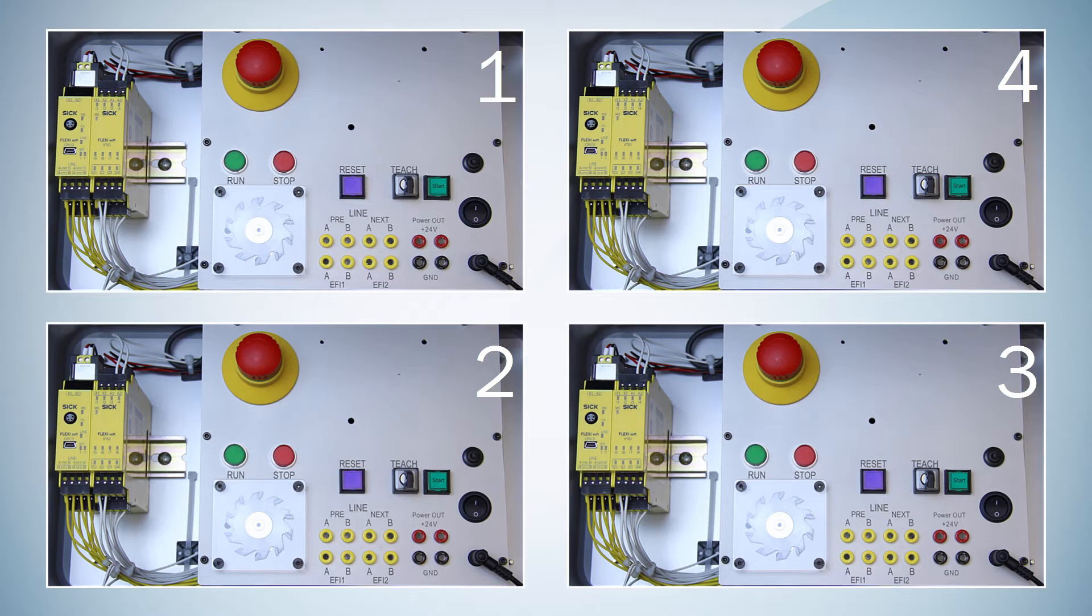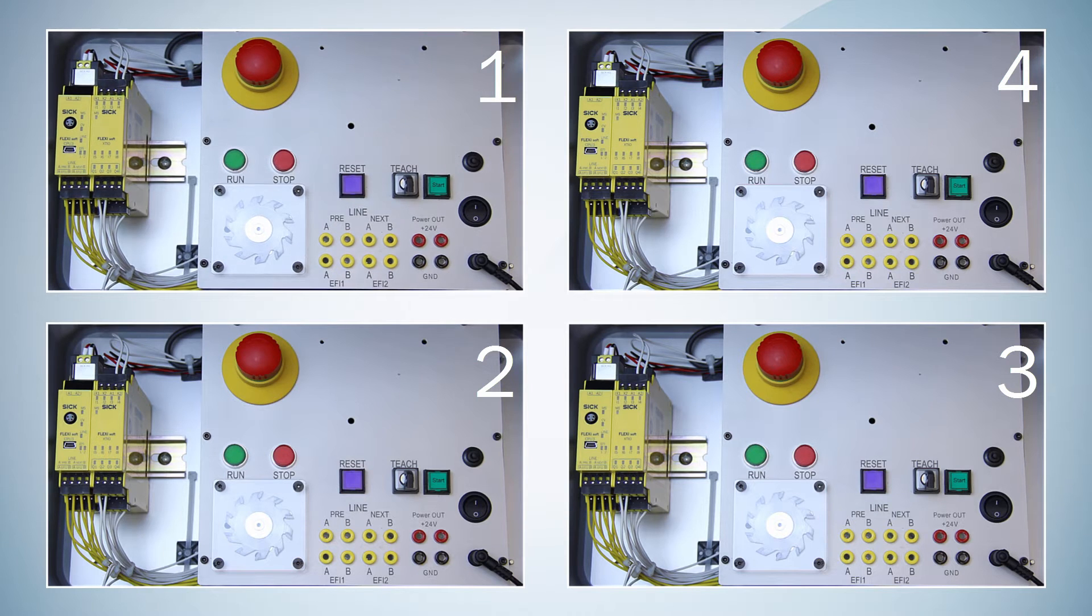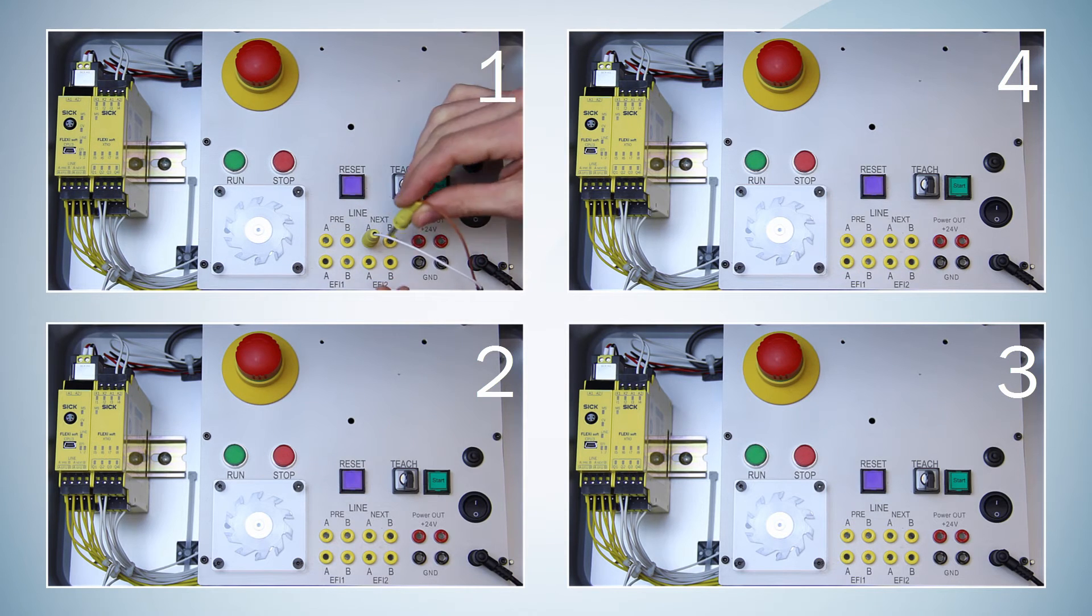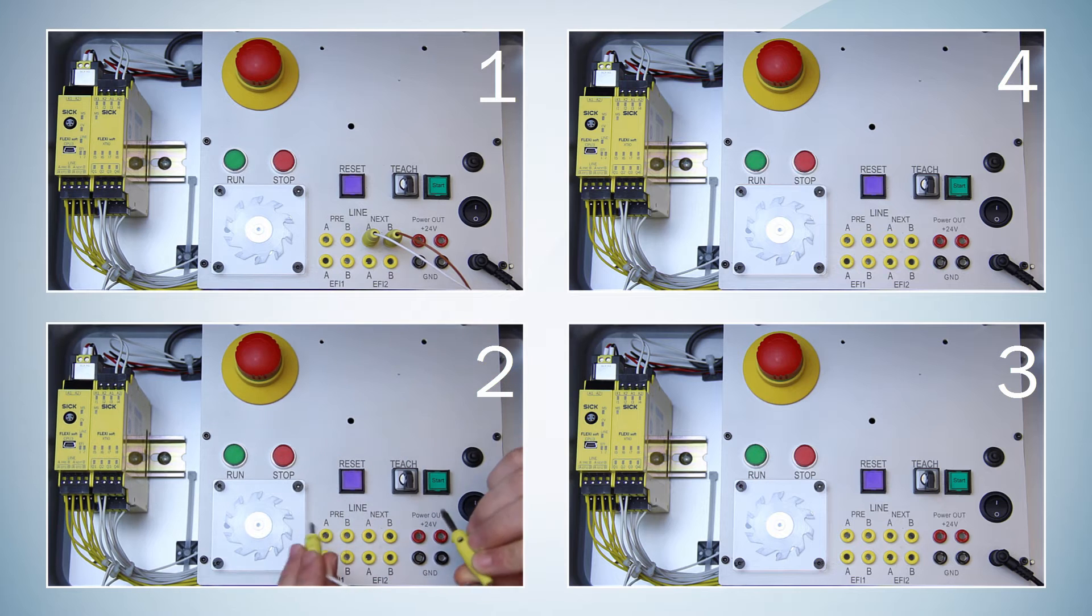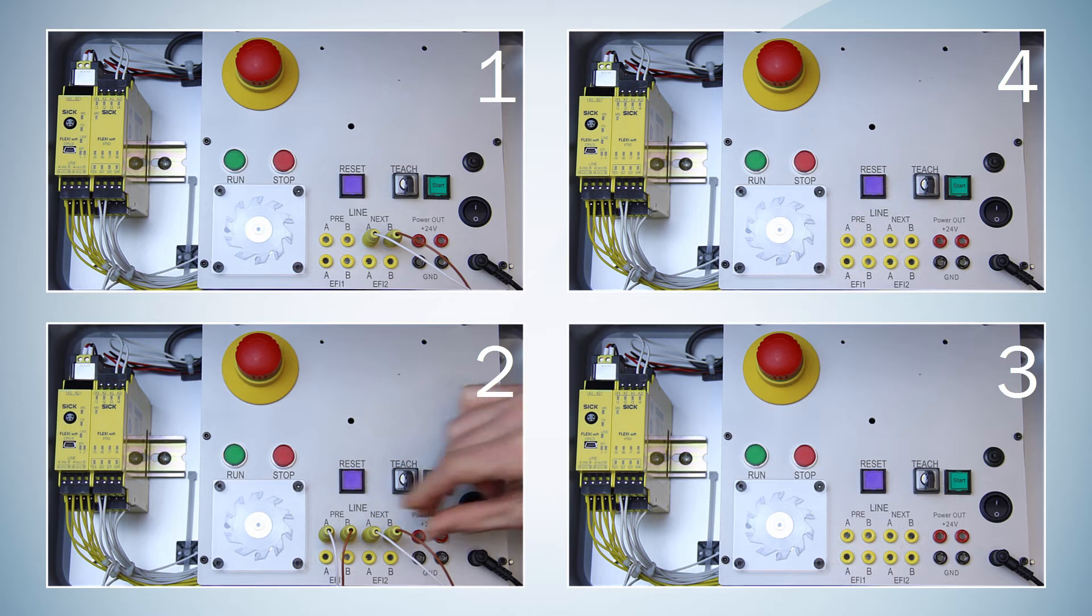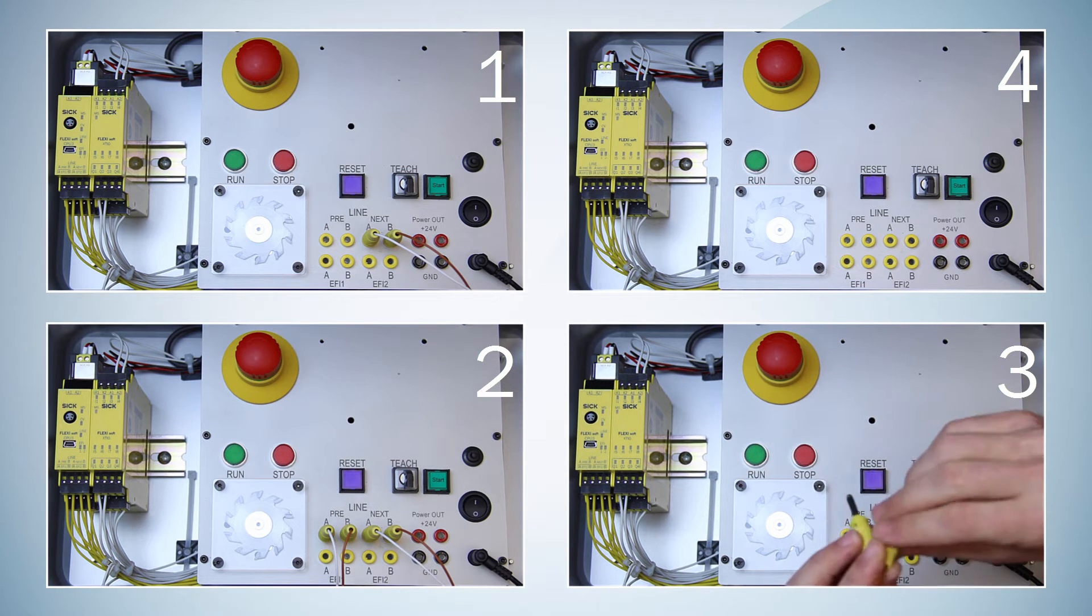Now let's connect the stations one after another via the Flexi-Line interfaces. I am going to connect the Line Terminals next of the first station with the Pre-Terminals of the next station. And then again with the other stations. Of course always A to A and B to B.